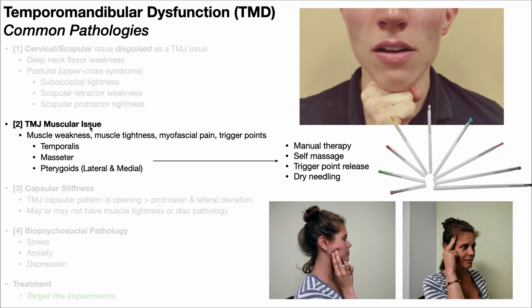A second pathology is a TMJ muscular issue. We're mainly thinking about the mastication muscles: temporalis, masseter, and the medial and lateral pterygoids. Those muscles could be weak, tight, or could have myofascial pain and trigger points. If the muscle is weak, you strengthen it — shown here is isometric strengthening of the muscles that promote mandibular depression. If the muscles are tight, you do stretches. There are also self-massage techniques; two commonly massaged muscles are the masseter and the temporalis. If there are trigger points, you can do ischemic compression or dry needling if allowed in your clinic and state.